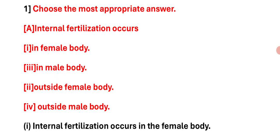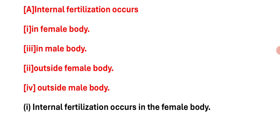Choose the most appropriate answer. First question: Internal fertilization occurs — option A: in female body, option B: in male body, option C: outside female body, option D: outside male body. Right answer: Internal fertilization occurs in the female body. Option A is the right answer.